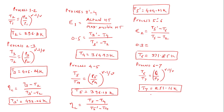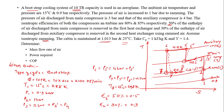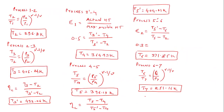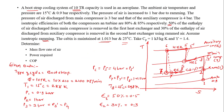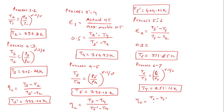Since the turbine efficiency is given, we calculate the actual turbine exit temperature T7-dash. The turbine efficiency formula is: efficiency equals minimum difference upon maximum difference. Here the minimum difference is (T6 minus T7-dash) and the maximum difference is (T6 minus T7). From this, the actual turbine exit temperature T7-dash comes out to be approximately 269.26 Kelvin. T8 is already given as 25 degrees Celsius, which is 298 Kelvin.